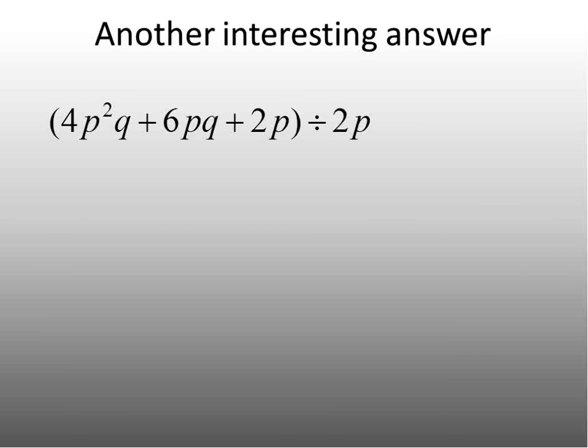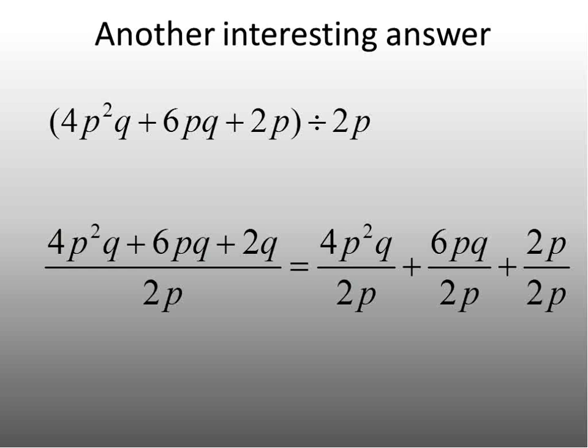For this question, and I believe this is the last question, there's going to be another interesting part to this answer and we'll show you when we get there. I take the division question and rewrite it as a fraction. Then, I'm going to divide my fraction into being three separate fractions. 4p squared q over 2p, 6pq divided by 2p, and then 2p divided by 2p.